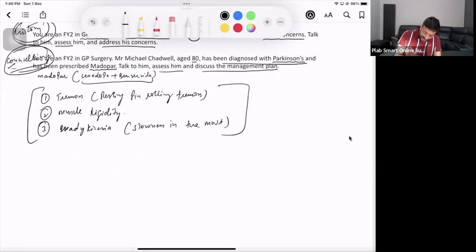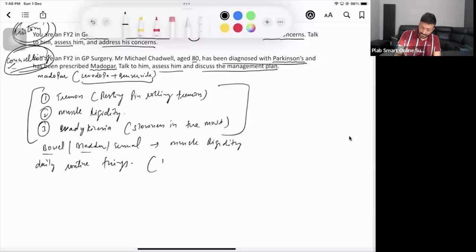What else you should ask? You can ask for some bowel-related problem, bladder-related problem, sexual health as well. Because sometimes you'll see patient has got bowel-bladder-related problem as well. The reason could be muscle rigidity. You can ask the patient if you are able to do your daily routine things or not. Mainly like, for example, buttoning the shirt and shoelaces. Patients are going to be struggling in that. So it's going to be difficult. These are the history points.